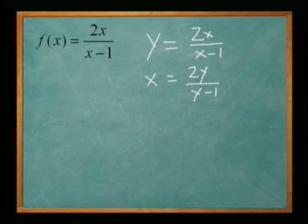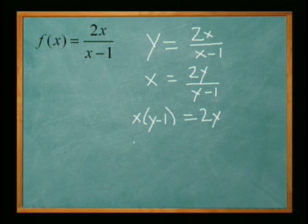Alright, so I'm going to cross multiply x times y minus 1 equals 2y. I'm going to multiply this left side out. Give me x times y minus x equals 2y.